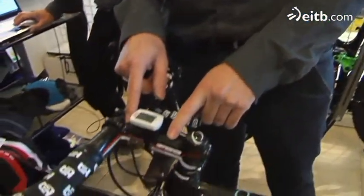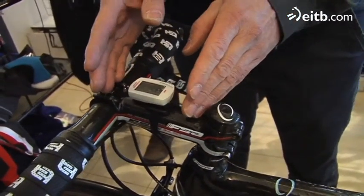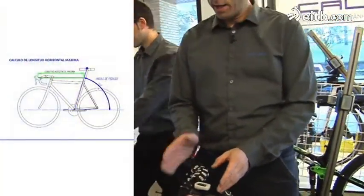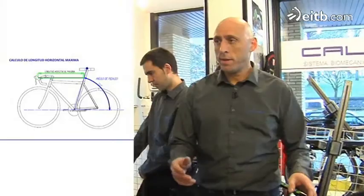Kuadroaren taila okerra hartzen baduzu odi bertikalean, aulkia gorago edo beherago jarrita arazoa erraz konpontzen da, hor margina handia delako. Baina odi horizontalaren luzerarekin hanka sartuz gero, arazoa izango duzu potentziarekin jokatzera, potentzia moztera behartzen zaituelako. Potentzia tarte batetik ateratzen bazara, aurreko gurpilaren zutikako ardatzetik urruntzen ari zara. Horrek bizikleta kerago gidatzea ekarriko dizu bi hurgunetan eta itxieretan, eta igotzerakoan ere aulkitik zutitzerakoan bizikleta ez duzu ondo dantzatuko.